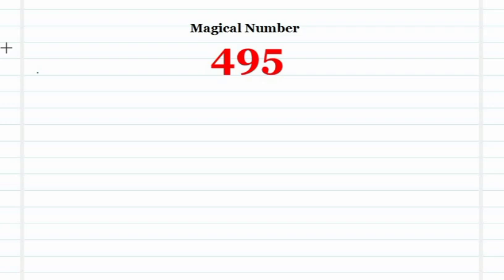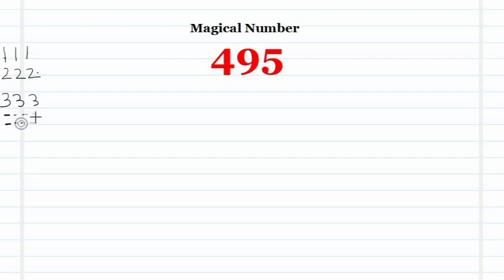495 is a three-digit number. Consider any three-digit number with at least two different digits. From any such number, we can always derive 495. One point to always keep in mind: all three digits should not be equal. For example, numbers like 111, 222, or 333 are not allowed.